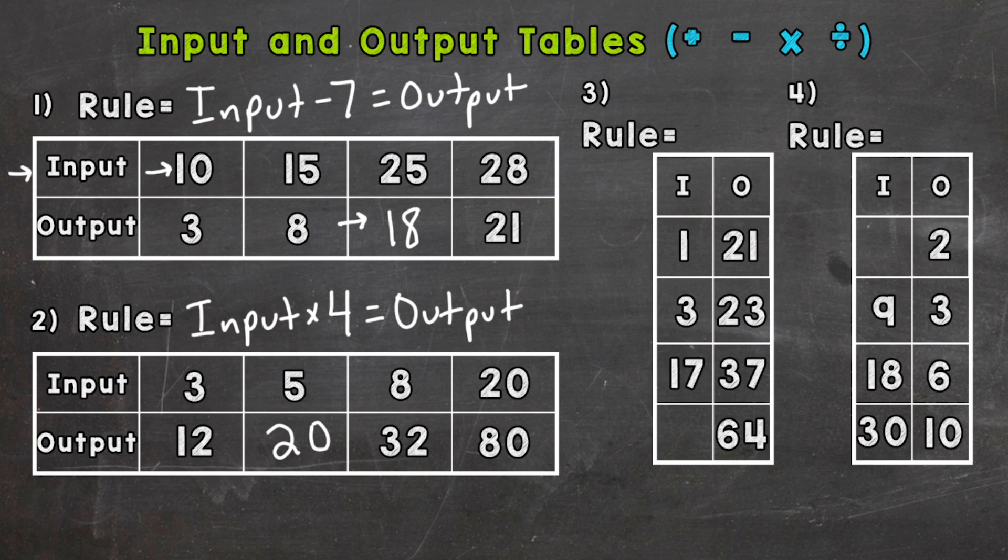3 plus 20 is 23, 17 plus 20 is 37, so our rule is input plus 20 equals the output. So what plus 20 equals 64? Well, 44.